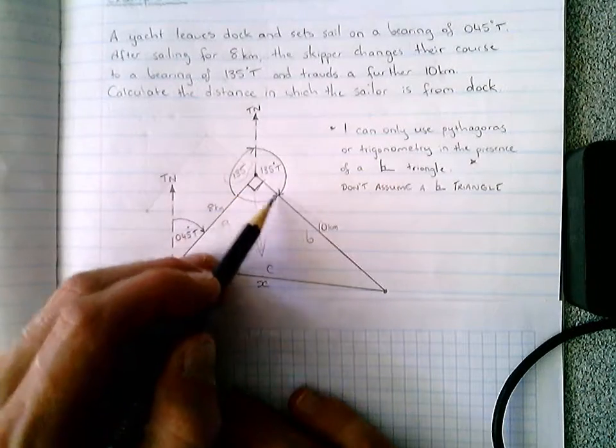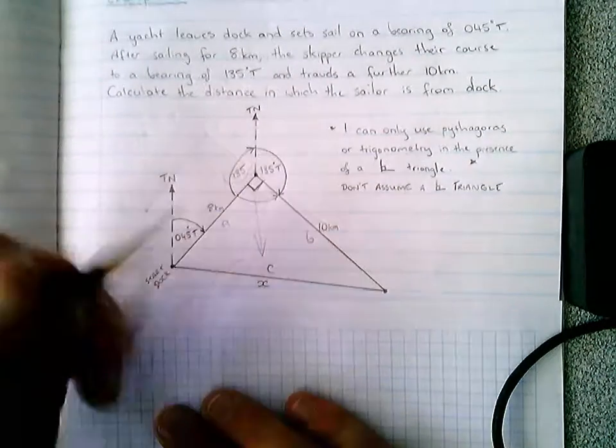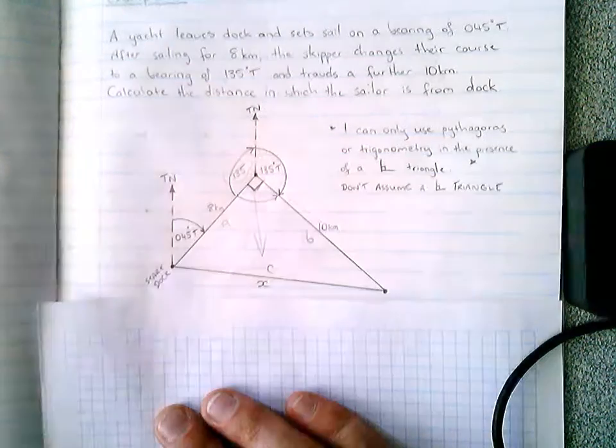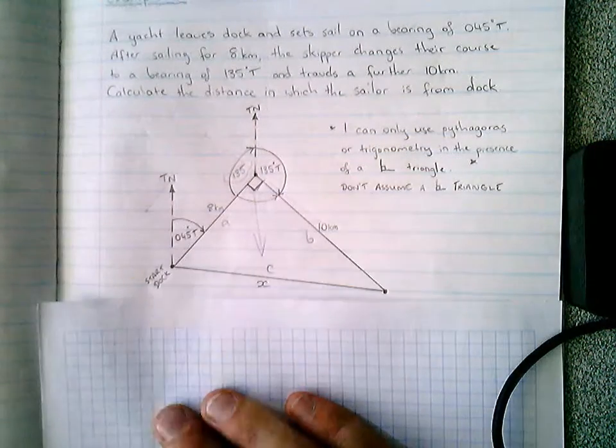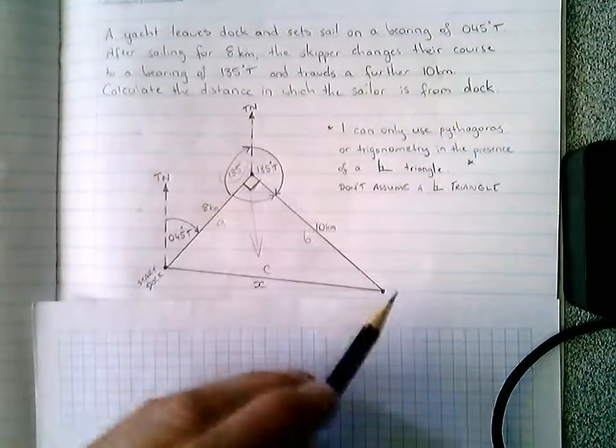thus the 135 degrees true, and sailed for 10 kilometers, finishing at this location here. Which then creates a triangle.